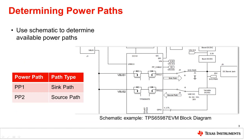Before editing the GUI, you need to evaluate your design's power paths. For this example, we will be looking at the TPS65987 EVM. The EVM contains two internal power paths: a sink path on power path 1 and a source path on power path 2.